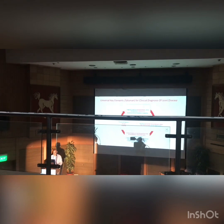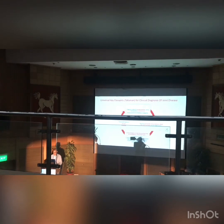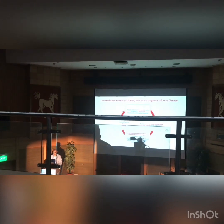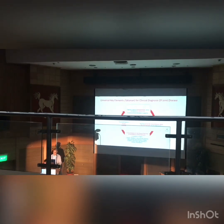The third key element is that whenever we are called upon to examine a joint, we must comment on five things: whether it is painful or pain-free, whether the disease is intra-articular or extra-articular, whether the joint is stable or unstable, whether the joint is deformed or not, and whether there is any stiffness. These five points apply to all joints — whether it is the elbow, knee, or any other. We must recognize, identify, and make a note.